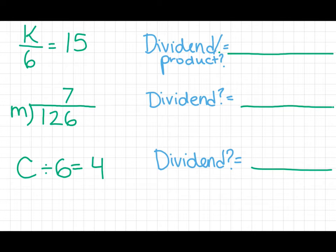Let's look at a few problems. It helps to identify, in a problem where you're missing a number from a division problem, it helps to identify the product or the dividend in your division problem. So where is the dividend in K divided by 6 equals 15? That's right. It's K.